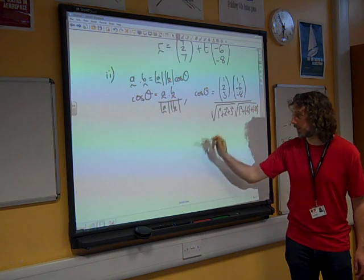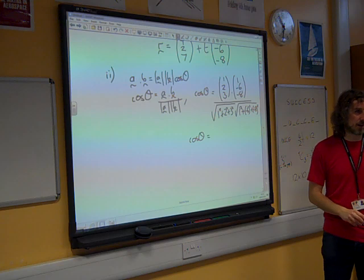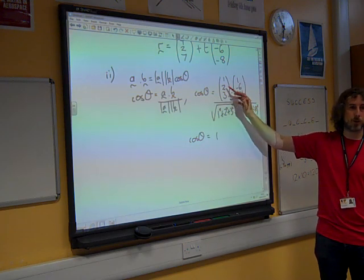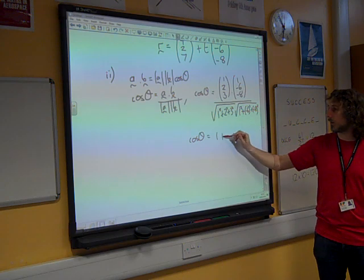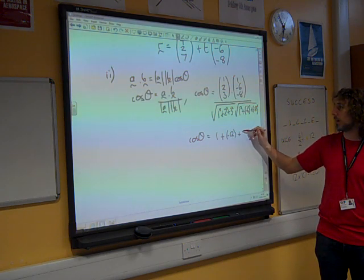So, cos theta is, remember how we do the scalar product, 1 times 1 plus 2 times minus 6 plus 3 times minus 8.